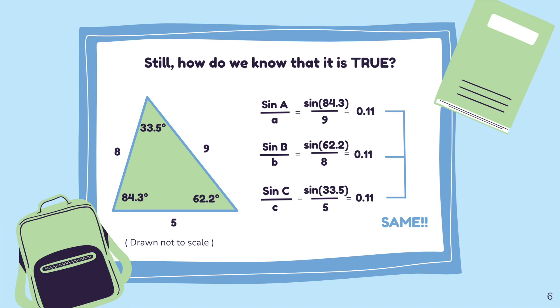Then, let 9 be side a, 8 be side b, and 5 be side c. Next, if we substitute the measures in the sine rule equation, we will get 0.11 for all of them. Therefore, the law of sines is true.